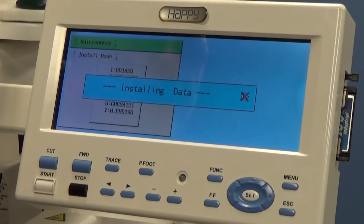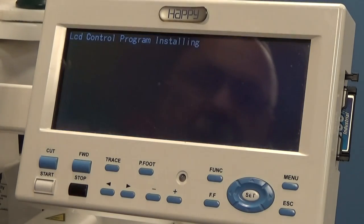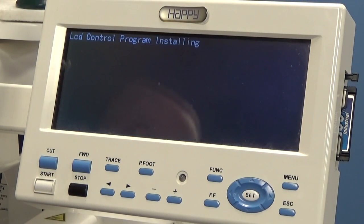Now, in a moment, this screen is going to change to a black screen. It's going to say LCD control programming. So we're just going to wait for that. Okay, there you go. This screen is going to go for approximately a few seconds, and then the machine is going to actually reboot.